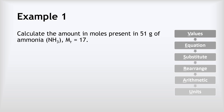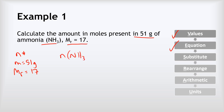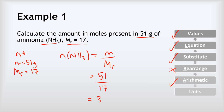So let's look at some examples. First: calculate the amount in moles present in 51 grams of ammonia, NH3, where the MR is 17. We copy out our values: n is unknown; mass M is 51 grams; MR is 17. Writing the equation: n(NH3) equals mass divided by MR. Substituting: 51 grams divided by 17 gives exactly 3 moles. That's our answer.